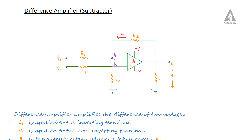V1 is connected to the inverting terminal through resistor R1, and V2 is also connected to the non-inverting terminal through R1. A part of the output voltage V0 is fed back to the inverting terminal through R2. The non-inverting terminal is also grounded through R2.